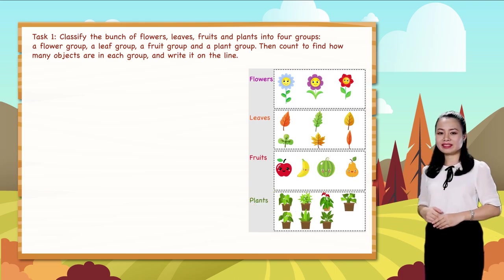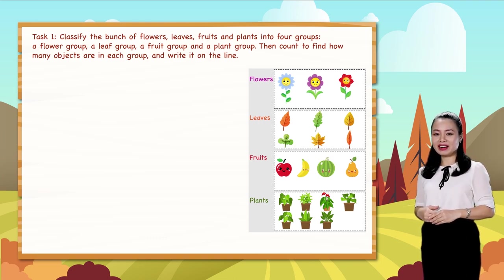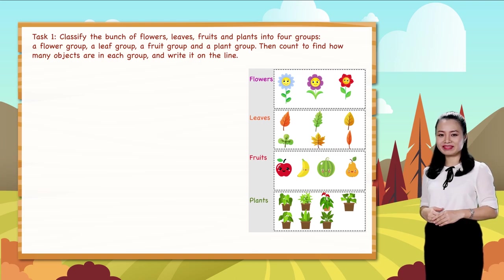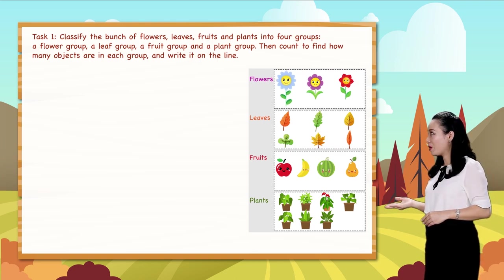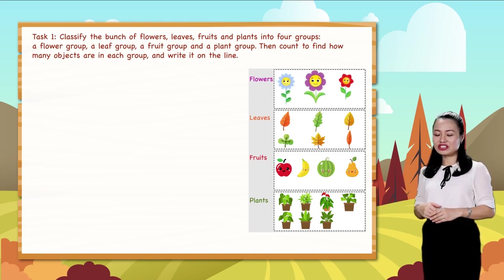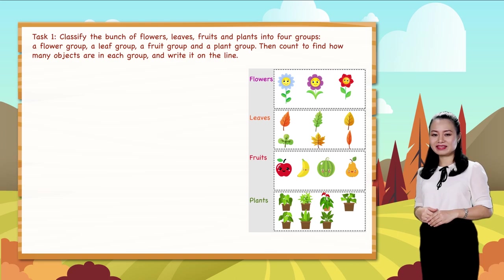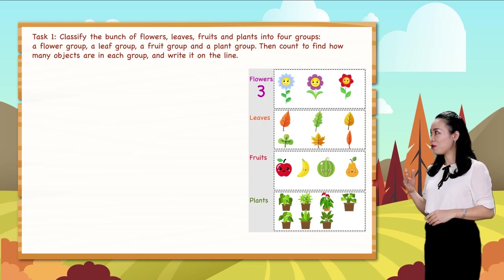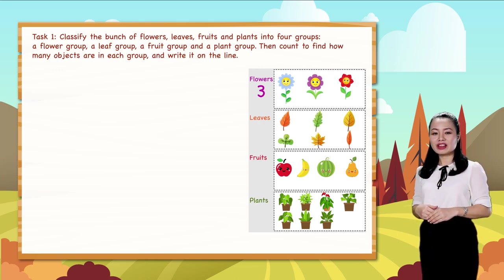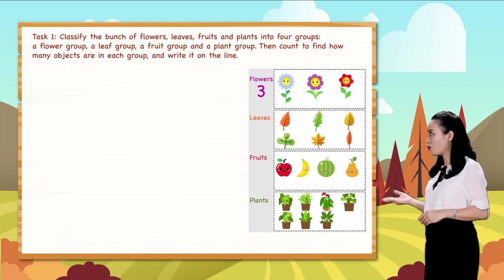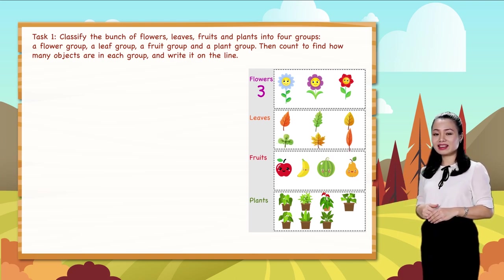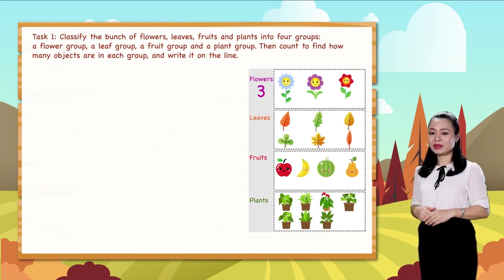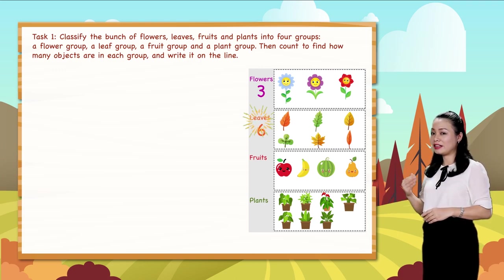Now let's count to find how many objects are in each group. One, two, three — so there are three flowers. One, two, three, four, five, six — so there are six leaves.